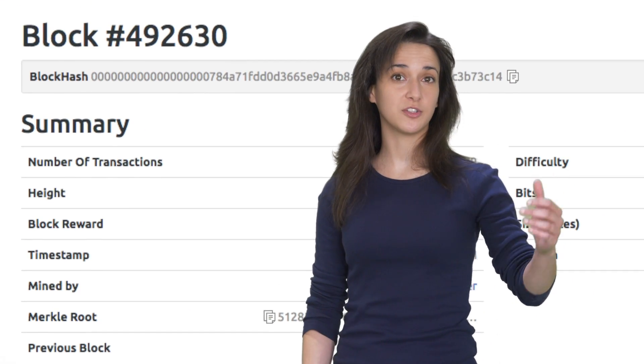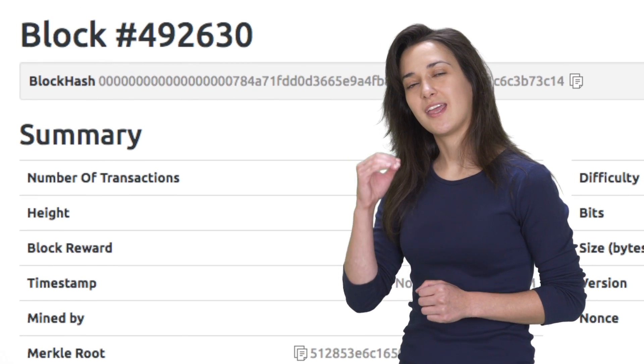So, anyone can go and look at the Bitcoin public ledger and see all of the transactions. When you send or receive Bitcoin, you can identify your transaction by the unique hash that is created.